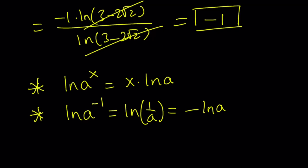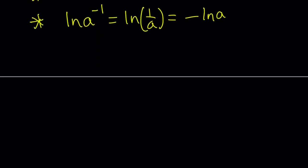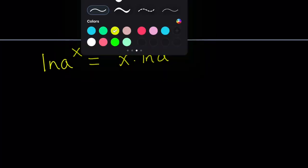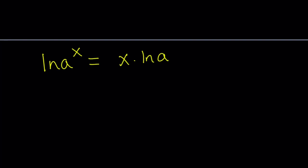Now, let's go ahead and prove the first property. The second one is just a special case. So, how can we prove that ln a to the power x is equal to x times ln a? We're going to use substitution here. I'm going to set ln a equal to something first.